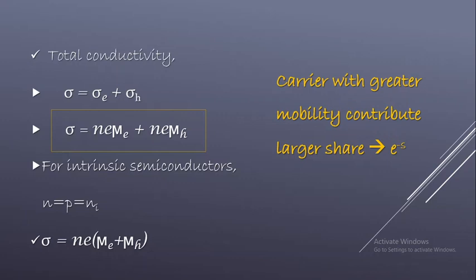The conclusion we can draw is that the carrier with greater mobility contributes a larger share to conductivity, since conductivity is directly proportional to mobility. Since mu is inversely proportional to mass, and the effective mass of electrons is less than that of holes, mobility of electrons is greater than that of holes. Therefore, the main contribution to total conductivity comes from electrons due to their greater mobility.